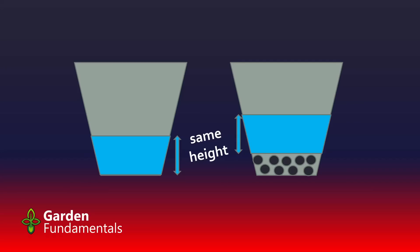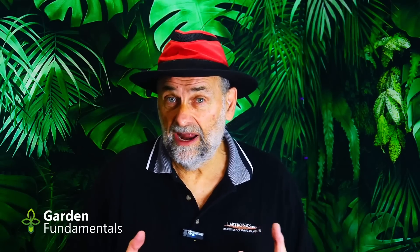But the height of the perched water table is exactly the same as in a pot without stones. So what have we done by adding stones? Well in effect, we've reduced the amount of soil that's not saturated. And that's not good for plants. So not only do the stones not improve drainage, but they actually increase the amount of supersaturated soil after you water.